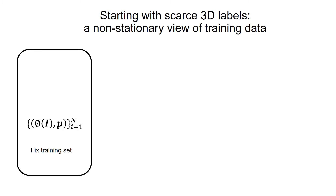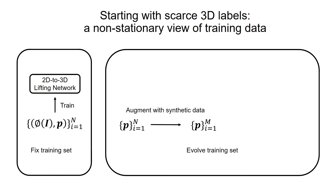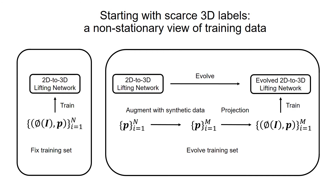Instead of using fixed and limited 2D-3D pairs to train a static network, we assume the training data can evolve with the help of heuristic rules. Specifically, we first augment the 3D labels with synthetic ones and project them back to form novel 2D-3D pairs, which may not be well represented in the original training data. Then, the augmented training set is used to train an evolved network.